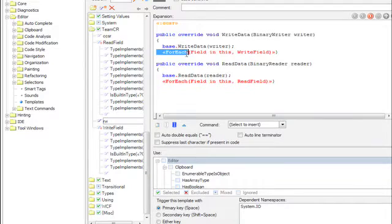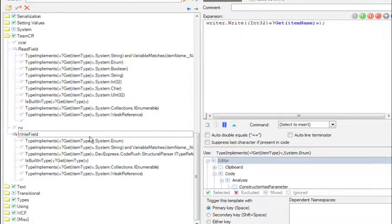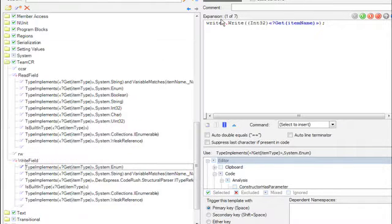And so for each field in this, we're going to call out to another template called write field. So here's write field. And write field has a number of different alternate expansions. And each one of these expansions is checking to see something about it. So here we're doing a call to type implements. This is called a get item type. What that's going to do is get the type of the item of the field that we're sending through the foreach, right? And we're comparing that against system enum. So if it's enum, we'll make this call right up over here. And then we go down a little bit here. The next one is kind of cool.